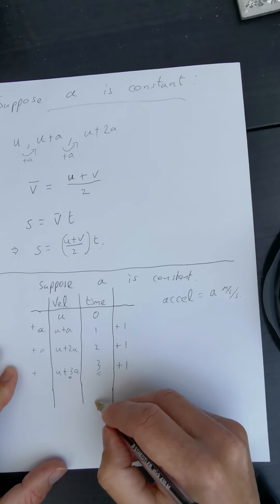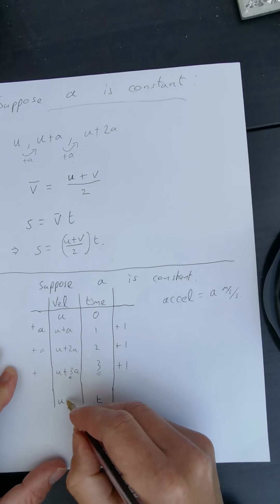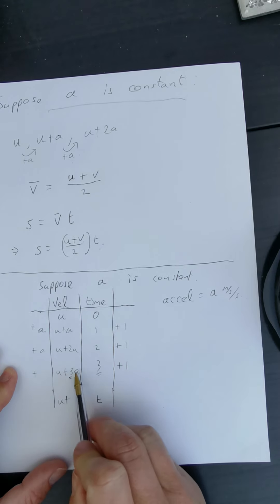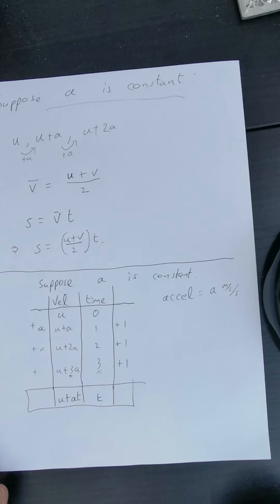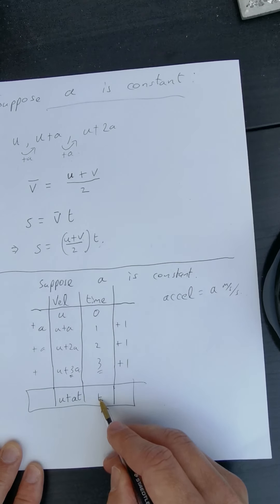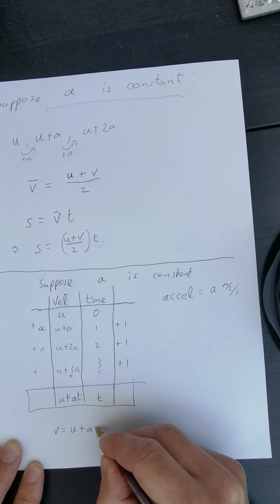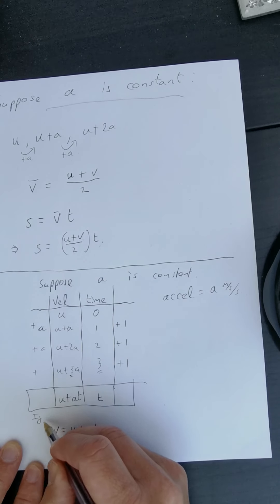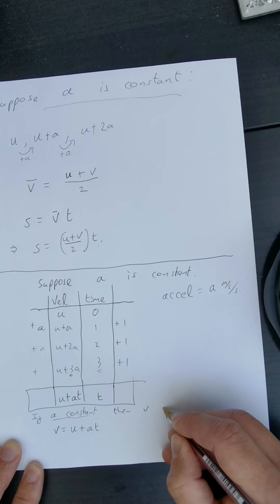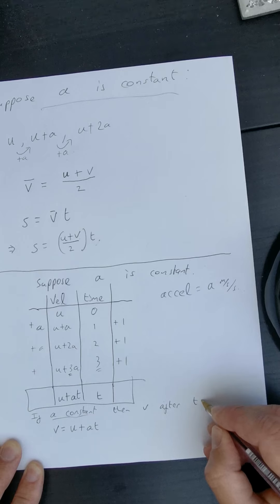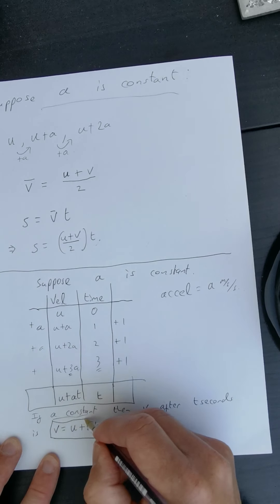It doesn't take much imagination to generalise: after t seconds, the velocity is always u — the initial velocity — plus t multiplied by the acceleration, giving v = u + at. So if the acceleration is constant, then after t seconds the final velocity equals initial velocity plus acceleration multiplied by change in time. That is absolutely crucial — this only holds when acceleration is constant.